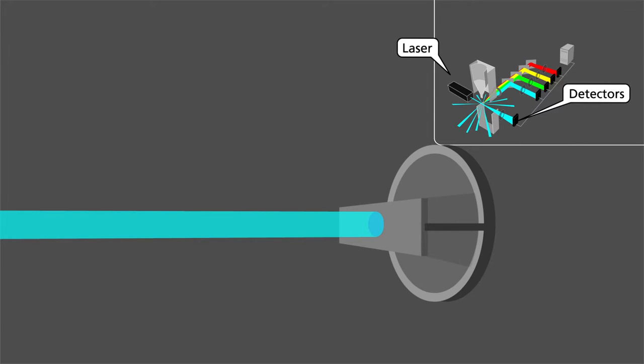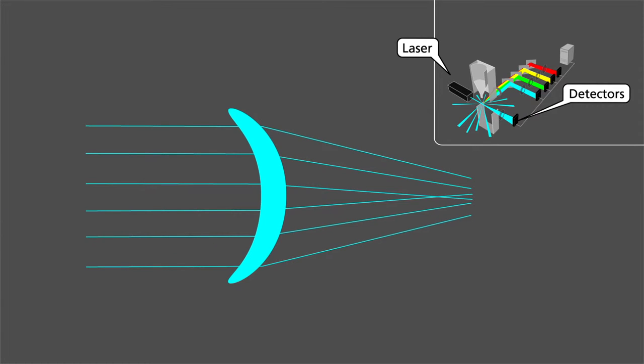The laser produces light of sharply defined color and direction. The required profile of the laser beam, elliptical or spherical, can be specified by selecting an appropriate set of lenses.